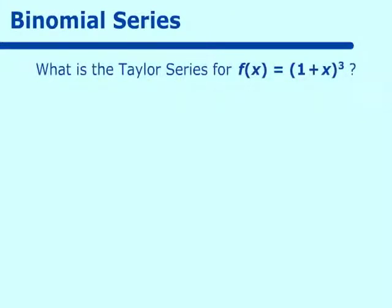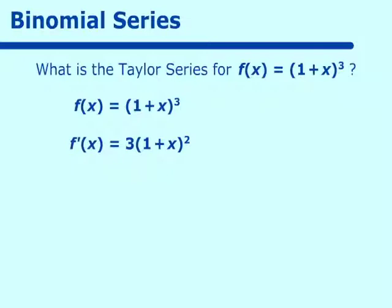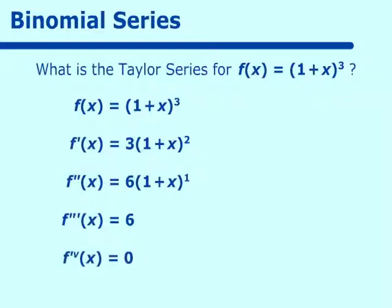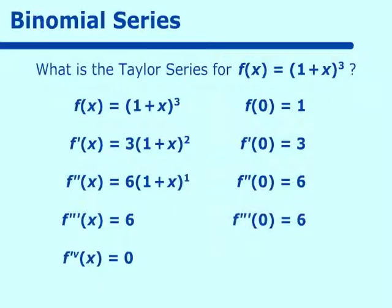What happens with our binomial series? If f(x) equals 1 plus x cubed, we have f(x) equal to (1 plus x) cubed. F prime of x equals 3 times (1 plus x) squared. F double prime of x equals 6 times (1 plus x). F triple prime of x equals 6, and f to the fourth derivative of x equals 0. Centered around 0: f(0) equals 1, f prime of 0 equals 3, f double prime of 0 equals 6, f triple prime of 0 equals 6, and f to the fourth derivative at 0 equals 0.